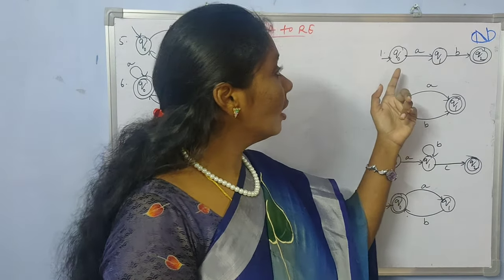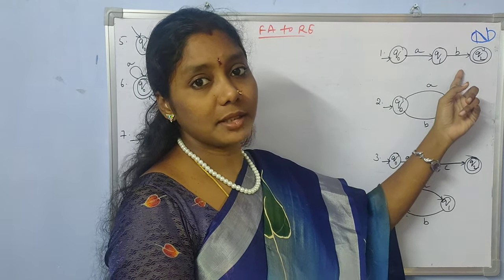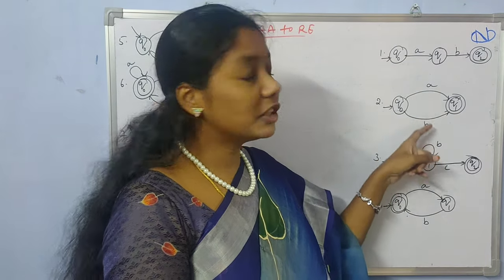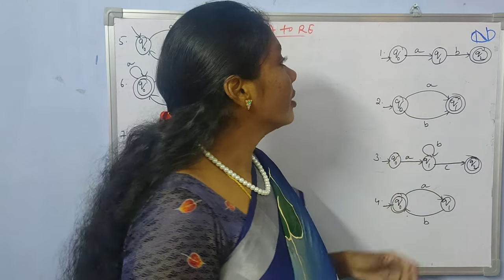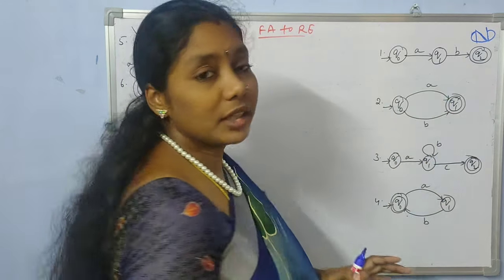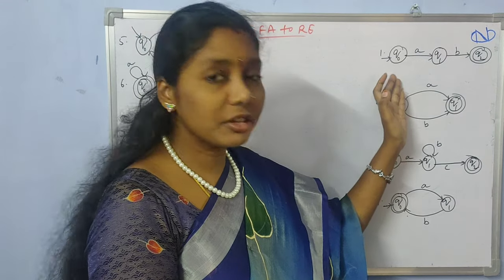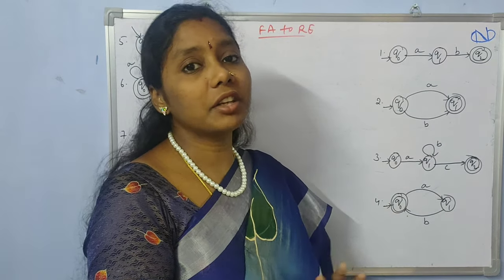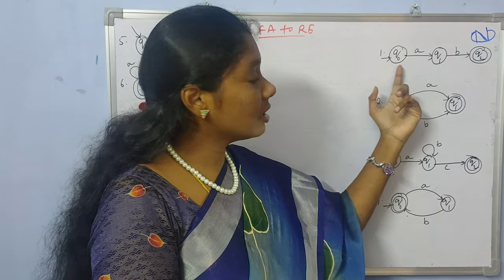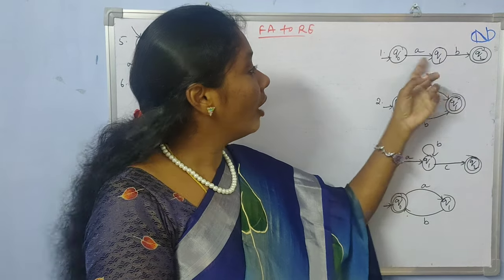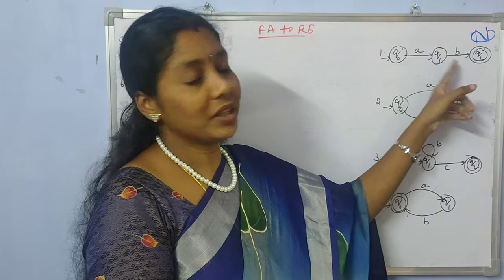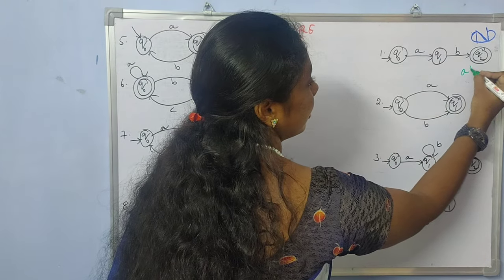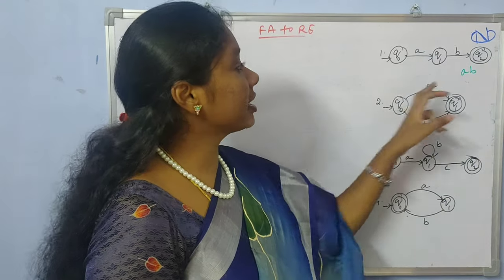Here is the first example. Whenever you find some series, which means concatenation, and whenever you find some parallel paths, which reflects the union. The only goal is how we can reach from the initial state to the final state — that path is nothing but the regular expression. Here the path is serial, which means concatenation, so the regular expression is AB.